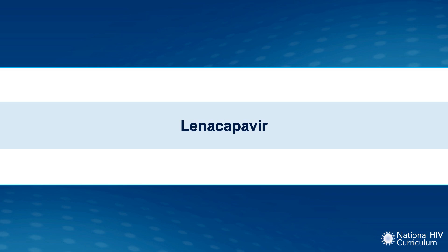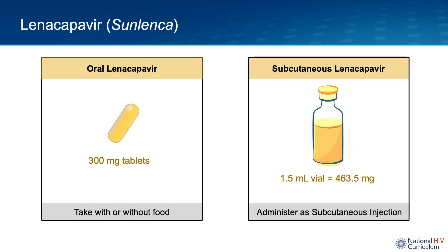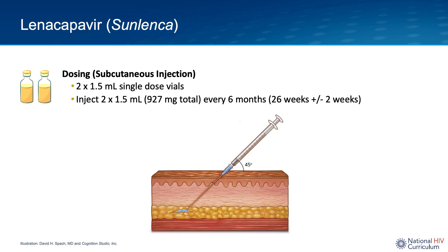At this time, linacapavir is the first and only FDA-approved capsid inhibitor. Linacapavir is available in both oral and injectable forms. Each tablet contains 300 milligrams of linacapavir and can be taken with or without food. For the subcutaneous injectable form, each 1.5 ml vial contains 463.5 milligrams of linacapavir. The subcutaneous linacapavir requires the administration of two 1.5 ml injections for a total of 927 milligrams every six months.